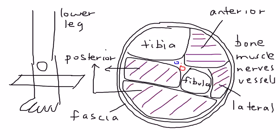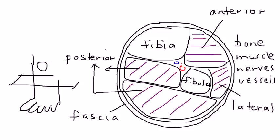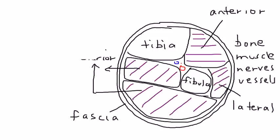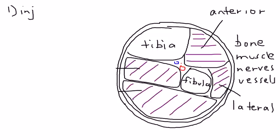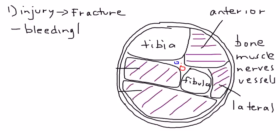So what happens? The best way to explain compartment syndrome is to show a chronology of events, step by step. Step one: the first thing that happens is some sort of injury — usually a fracture, but it could be other types of injuries as well, such as a crush injury. This injury or fracture leads to bleeding or a hematoma.